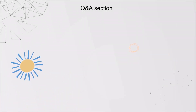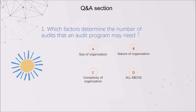Let's take a break and make a review about the content we've covered. Which factors determine the number of auditors that an audit program may need? The answer is D or above.